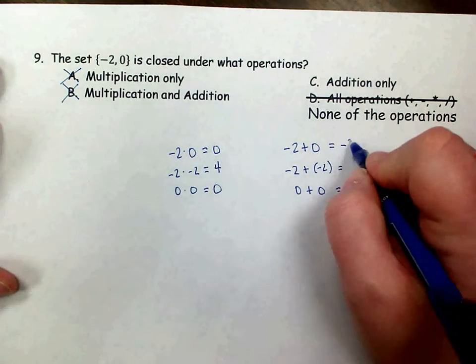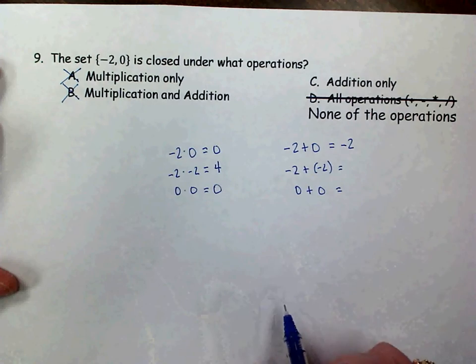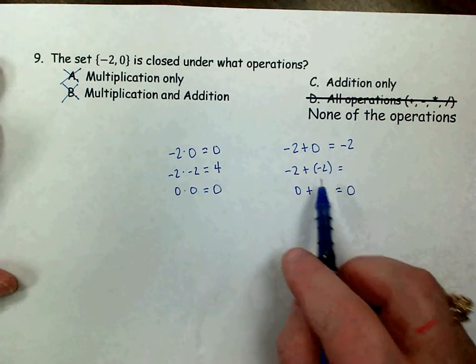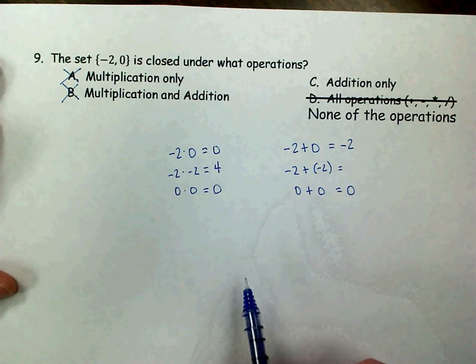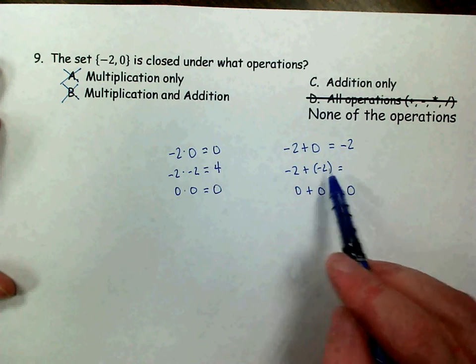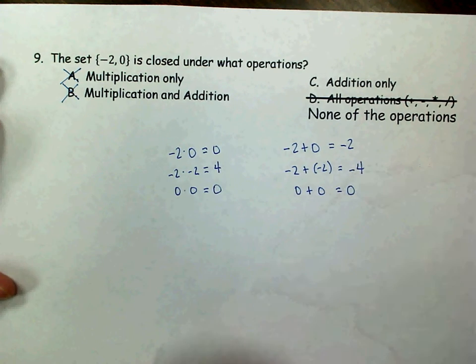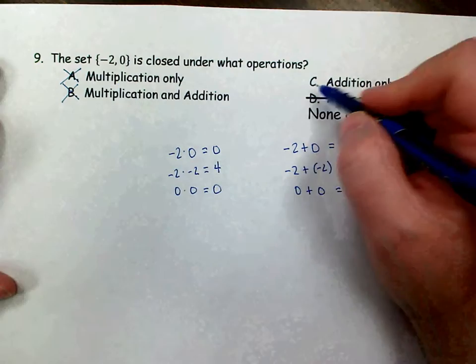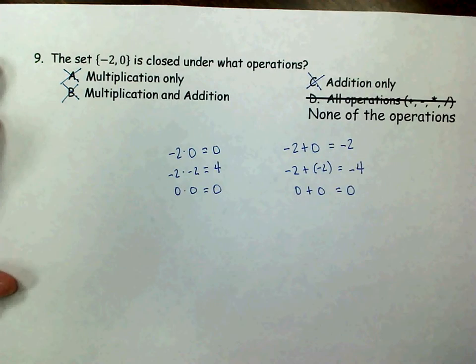Negative 2 plus 0 is negative 2, which is part of my set. 0 plus 0 is 0, and that's part of my set. Again, the problem is right here with the negative 2s. Negative 2 plus negative 2 is negative 4. Negative 4 is not in that set. So it is not closed for addition either.